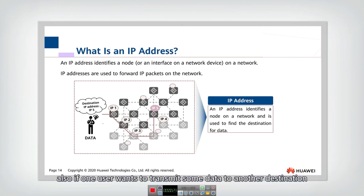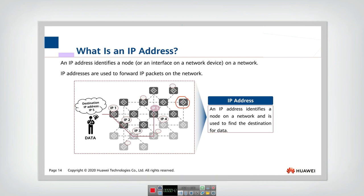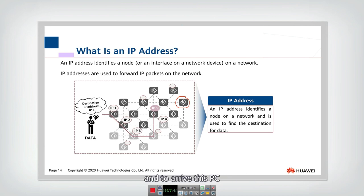If one user wants to transmit some data to another destination, then he must know the IP address of the destination PC. Then he can know that his packet should go along some paths until it arrives that PC. So IP address is very, very important.